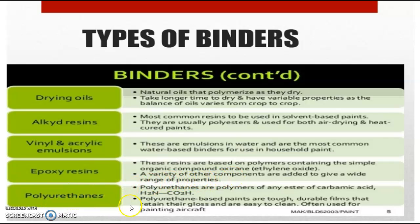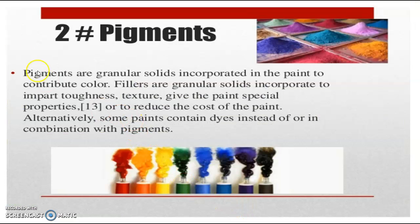Next, polyurethanes. These are the polymers of esters of carbamic acids, that is NH2COOH, which has both an amine group and an acid group. Polyurethane-based paints are tough, durable films that retain their gloss and are easy to clean, often used for painting aircraft.